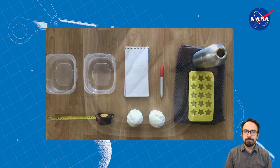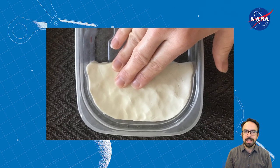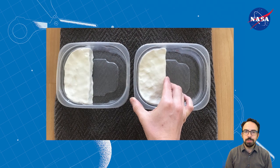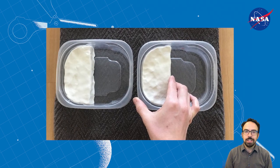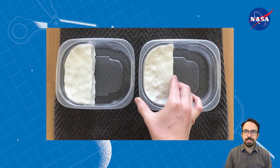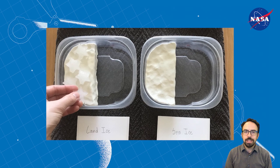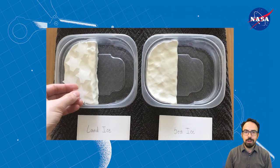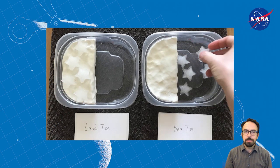Take your clay and press equal amounts into one side of both plastic containers, making a smooth, flat surface representing land. If you don't have clay, try piling some small rocks into the tub to represent land. In one container, put as many ice cubes as possible on the flat clay or rock pile — this represents land ice. In the other container, place the same number of ice cubes on the bottom of the container, next to the land — this represents sea ice.